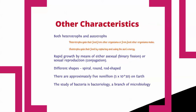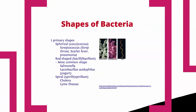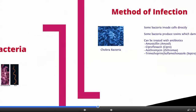Bacteria come in three different shapes: spiral, round, and rod-shaped. There are approximately five nonillion bacteria on Earth — that's five times ten to the thirtieth, so a lot. You can tell a bacterium's shape from its name. Spherical bacteria have the suffix -coccus, like streptococcus if you've had strep throat. Rod-shaped bacteria have the suffix -bacillus, like lactobacillus in yogurt. Spiral-shaped bacteria have the suffix -spirilli or -spirillum. We'll look at bacteria in class next week.